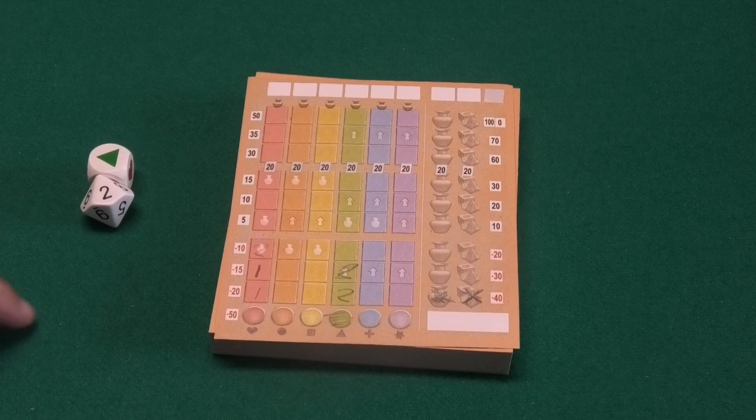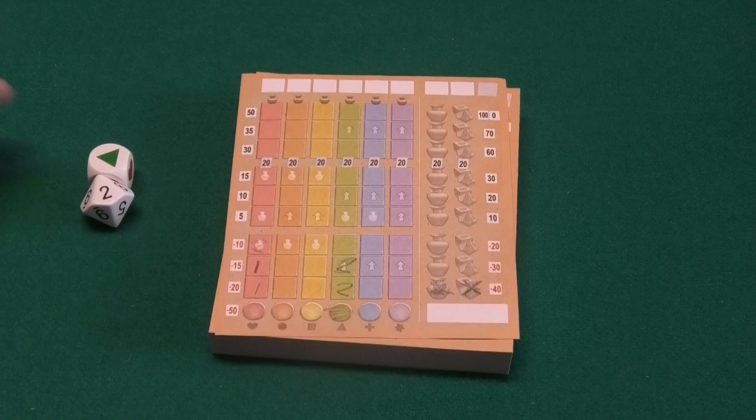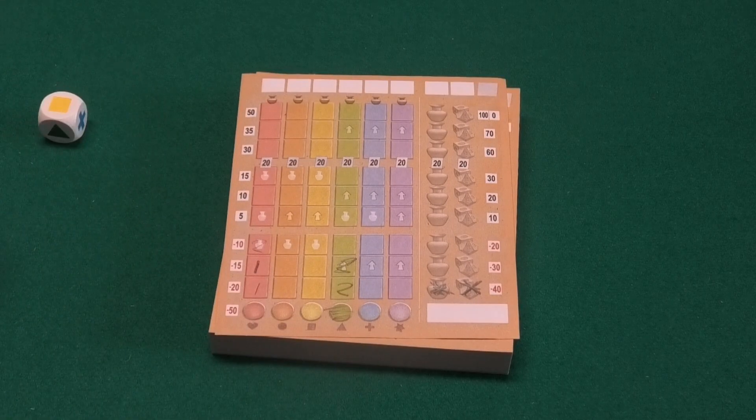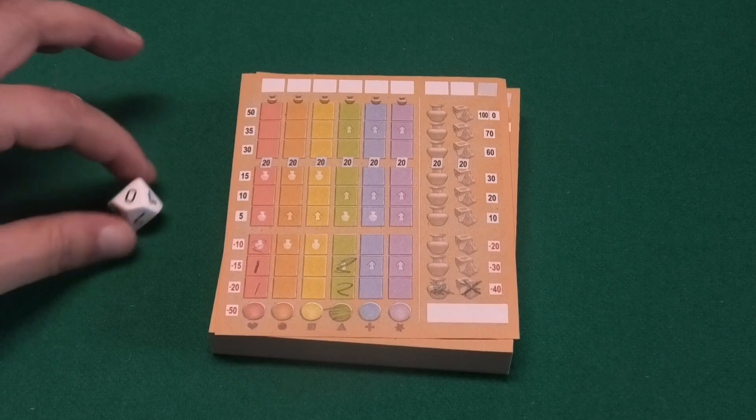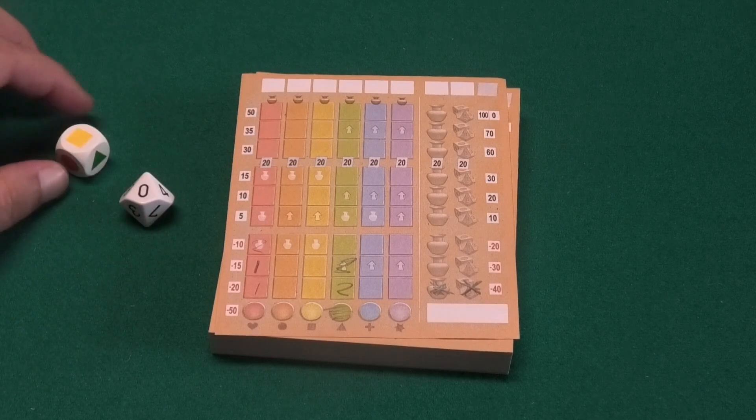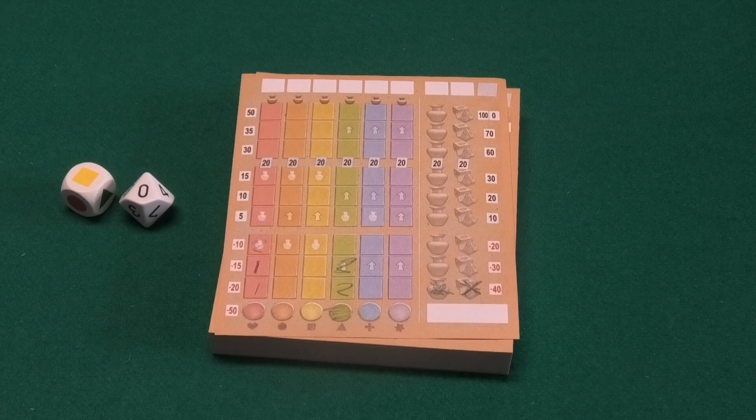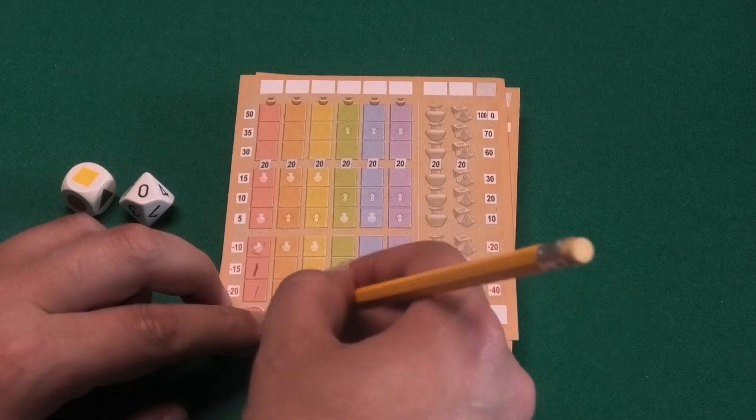But if I want to gamble on yellow, then I first need to have the choice to get a zero on the dice and a yellow. And now, before starting yellow, I can check this box, so knowing at the end of the game I will double the points, either positive or negative.